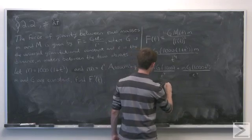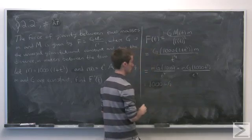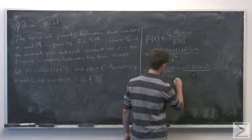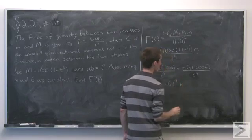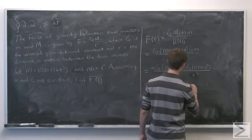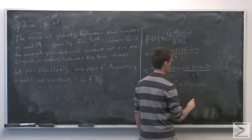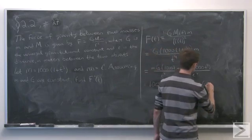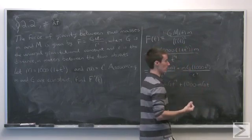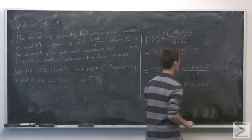1,000 small m G t to the minus fourth plus 1,000 small m times G t to the, here we have 3 minus 4, so to the minus first power.